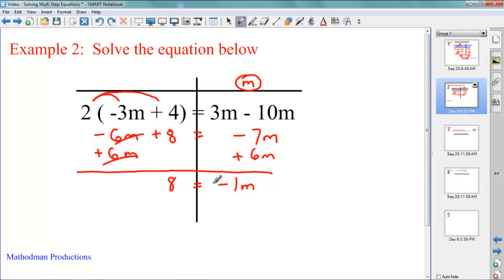You're almost done with the problem. This is not yet solved. Final step is to divide by negative 1. 8 divided by negative 1 is just negative 8 equals M.